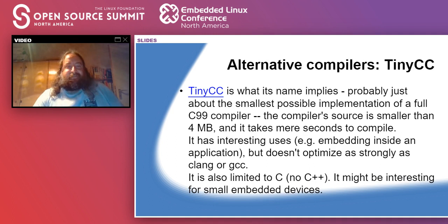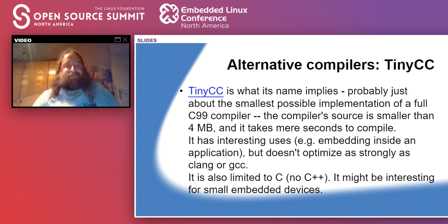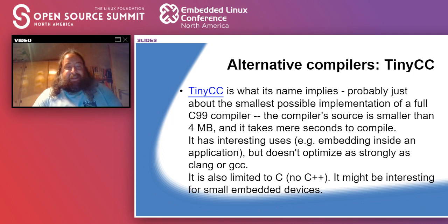Another alternative compiler is TinyCC, which as the name tells you is one of the smallest implementations of a full C99 compiler. The compiler source itself is smaller than four megabytes compared to multiple hundreds of megabytes for both gcc and clang, and it takes only a few seconds to compile — I managed to compile TinyCC in less than 10 seconds on a relatively fast box. However, it doesn't optimize as strongly as clang or gcc, and it's limited to C — no C++, no Fortran. It is certainly interesting for small embedded devices, and you can also embed the compiler to use C as a scripting language inside your application.